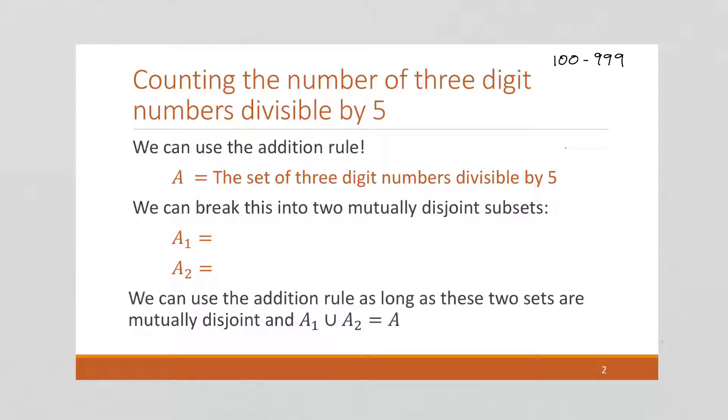Well, here we're going to use the addition rule. So we're going to say that A is the set of all three-digit numbers divisible by 5. So A involves all those numbers that are divisible by 5. And I want to break this into two mutually disjoint subsets. How do you know if a number is divisible by 5?